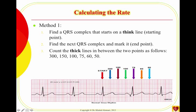The first method: look at the strip and find a QRS complex drawn over a thick line. There are light lines bordering small boxes and thick lines at the borders of big boxes. A QRS in the middle doesn't work for this method; you need one that falls on a thick line. Once you find it, the next thick line represents a rate of 300, the one after is 150, then 100, then 75.